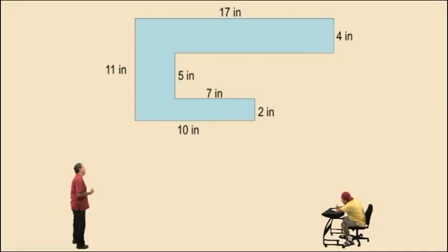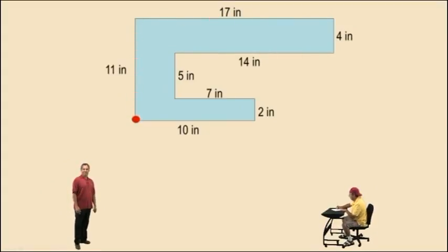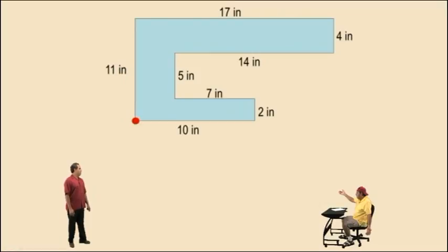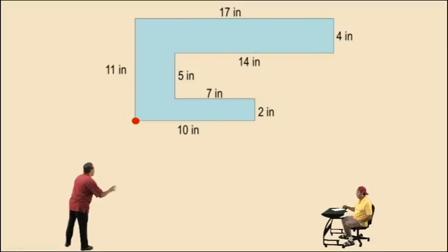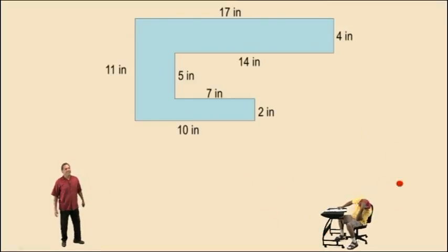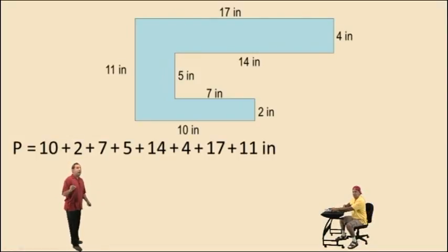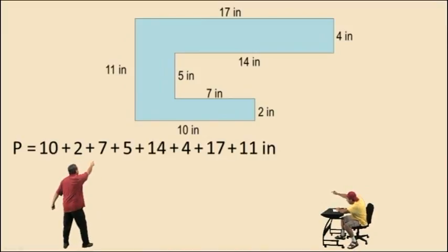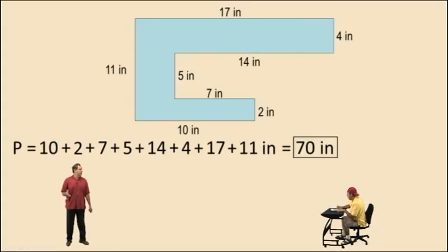Okay, here's our figure. Let's fill in our missing vertical length and our missing horizontal length. Now we're going to find the perimeter. In what order do we need to add up the numbers? Remember, it doesn't matter. So let's try it this way: 10 plus 2 plus 7 plus 5 plus 14 plus 4 plus 17 plus 11. Go ahead and hit pause on this video and work it out. When you work it out, you should get 70 inches for your final answer. Don't forget to circle or box your answer and we'll see you again soon.